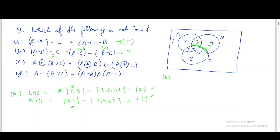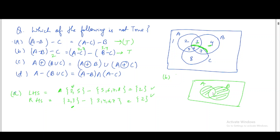Option (c) involves the symmetric difference. The symmetric difference of A and B contains all elements in A or B but not in their intersection — essentially the non-overlapping parts. The formula is: A △ B = (A minus B) union (B minus A).